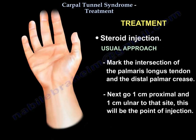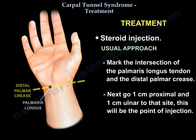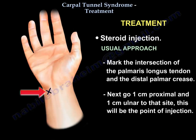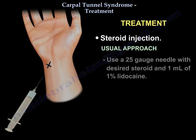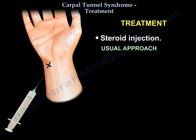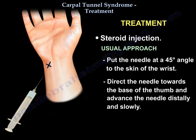How do you inject the Carpal Tunnel? Mark the intersection of the palmaris longus tendon and the distal palmar crease. Next, go 1 cm proximal and 1 cm ulnar to that site — this will be the point of injection. Use a 25-gauge needle with the desired steroid and 1 ml lidocaine. Put the needle at a 45-degree angle to the skin of the wrist, and direct the needle towards the base of the thumb, advancing the needle distally and slowly.